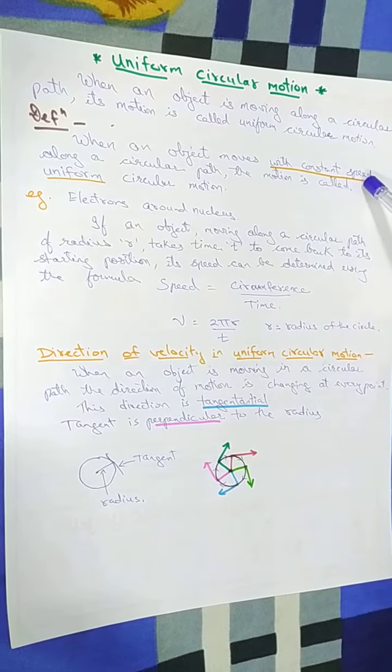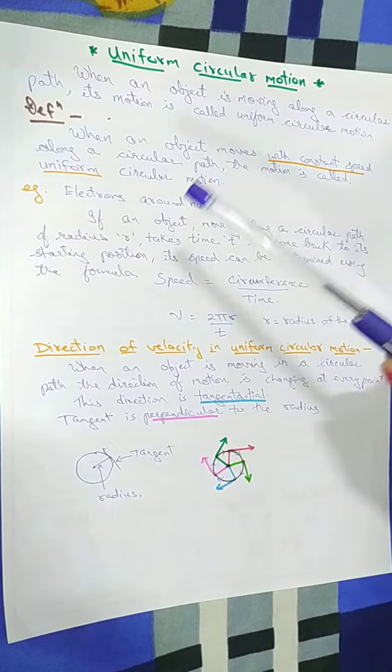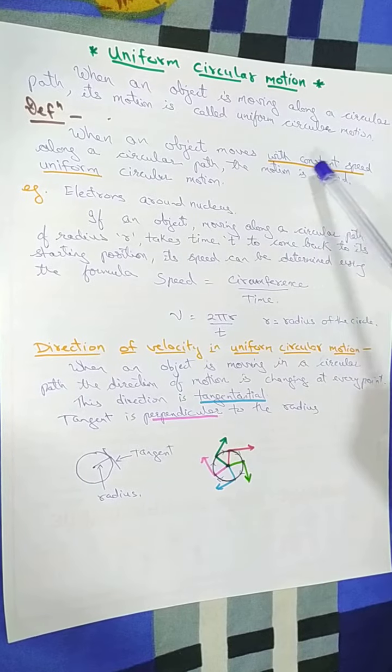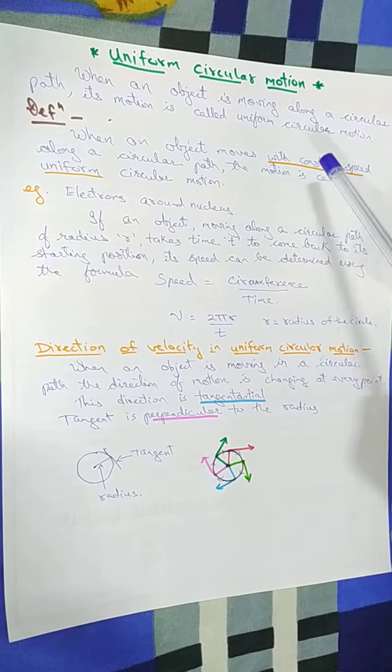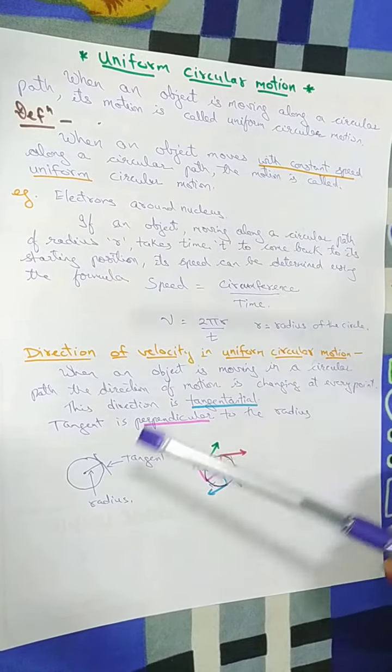Here the word is constant speed and hence it is uniform circular motion. Now keep in mind that when it moves with a constant speed, but as it moves in the circle, the direction is changing and hence this is an accelerated body.